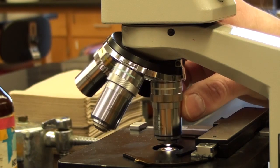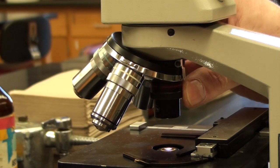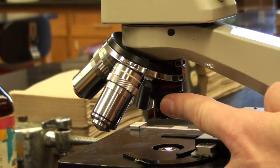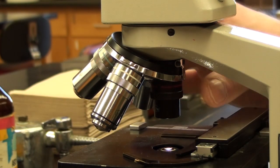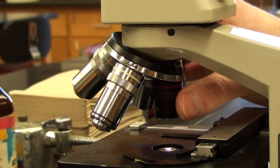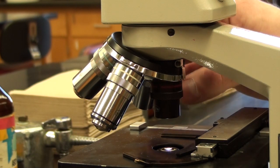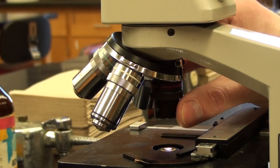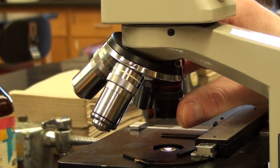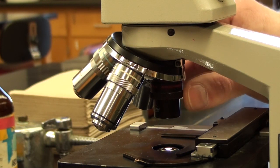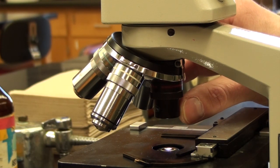The actual magnification of the microscope is determined by taking the objective lens and multiplying it by the eyepiece. In most of our cases, it's 10 times power. So in this particular case, where I have a 4x lens and a 10x eyepiece, I would be magnifying the object 40 times its normal size.